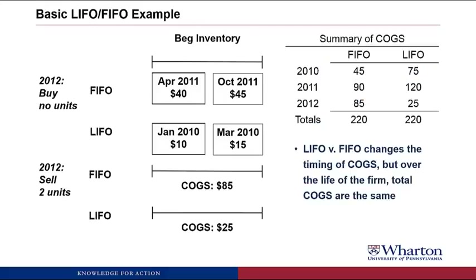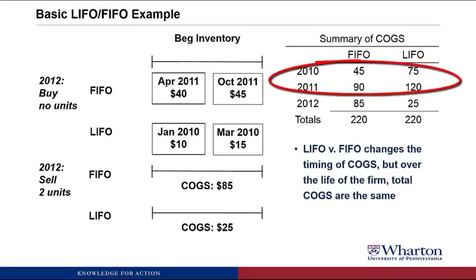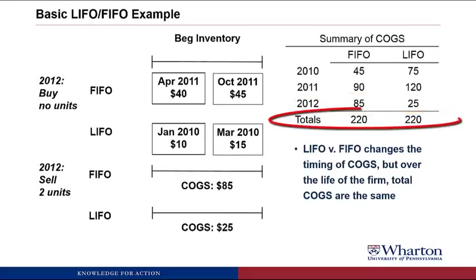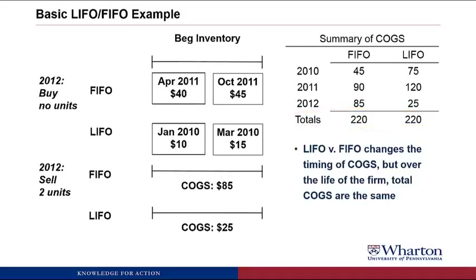Looking at a summary of Cost of Goods Sold over time: in 2010 and 2011, FIFO had lower COGS by $30 each year. But then in 2012, FIFO had $60 higher COGS, which means the total COGS over the three years is identical. So FIFO versus LIFO changes the timing of Cost of Goods Sold, but over the life of the firm, total Cost of Goods Sold is going to be the same either way.